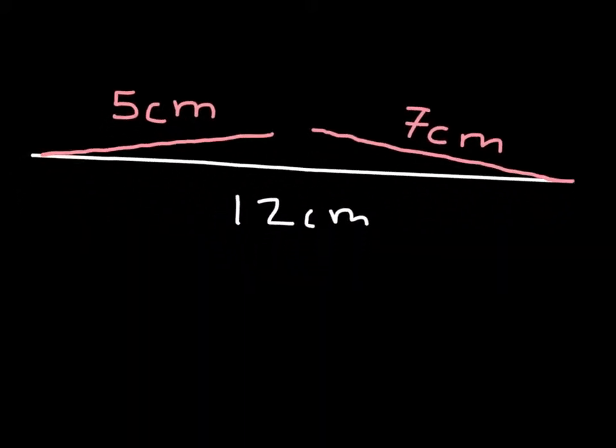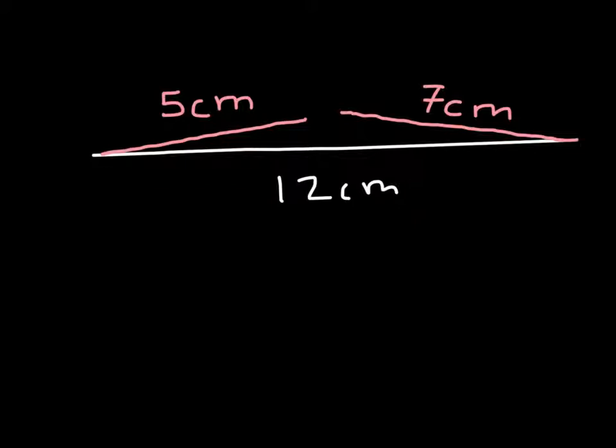If you have a side of 5 and a side of 7, some people might be tempted to think that would work because 5 plus 7 equals 12, so they should be able to touch. But you have to remember that because we have an angle here other than 0—in other words they're not completely laid down flat—they're not going to cover the same horizontal distance.